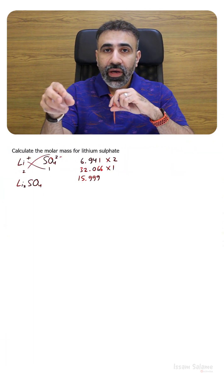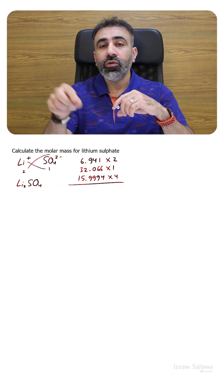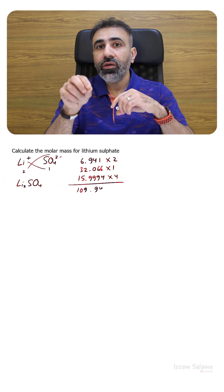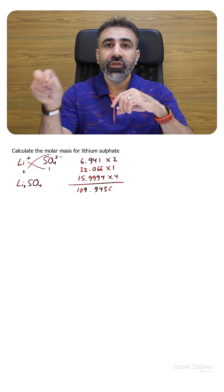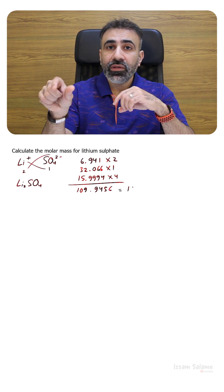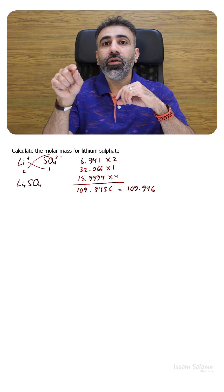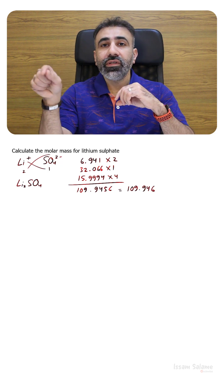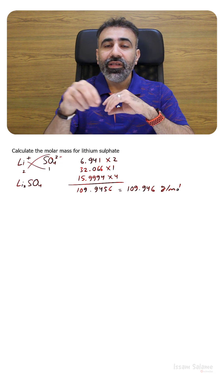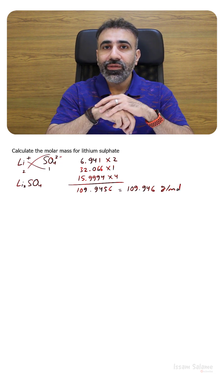We do the math and find the molar mass for lithium sulfate is going to be equal to 109.946 grams per mole. This is how to find the molar mass for ionic compounds.